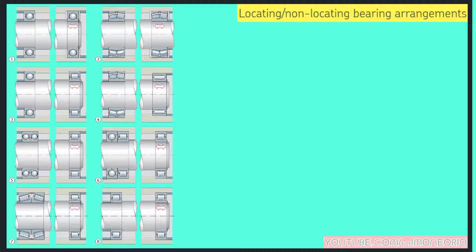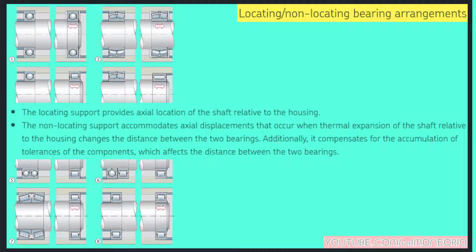Here we are, and why we use locating and non-locating bearing arrangements. The locating support provides axial location of the shaft relative to the housing. The non-locating support accommodates axial displacement that occurs when thermal expansion of the shaft relative to the housing changes the distance between the two bearings. It also compensates for the accumulation of tolerances of the components which affects the distance between the two bearings.